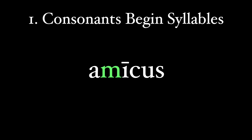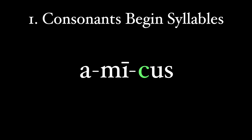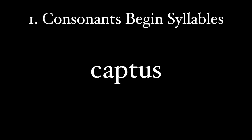So this 'm,' since it can either end the first syllable or begin the second, would rather begin the second. The 'i' and the 'c' begin the third syllable instead of ending the second. The 's' has no choice, so it has to end the third syllable. So here's our word in all of its syllabic glory: a-MI-cus - not A-mi-cus, but a-MI-cus.